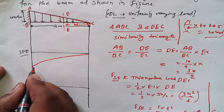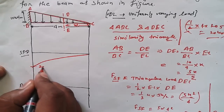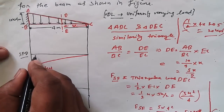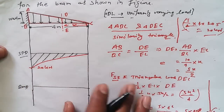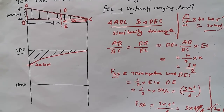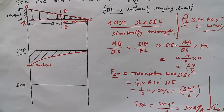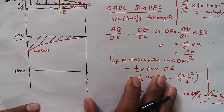The diagram for shear force looks like this, and the value is 20 kilonewtons. So this is the shear force diagram for this cantilever beam with UVL. Now that the shear force diagram is clear, we need to find out how to draw the bending moment diagram — that is also very important.